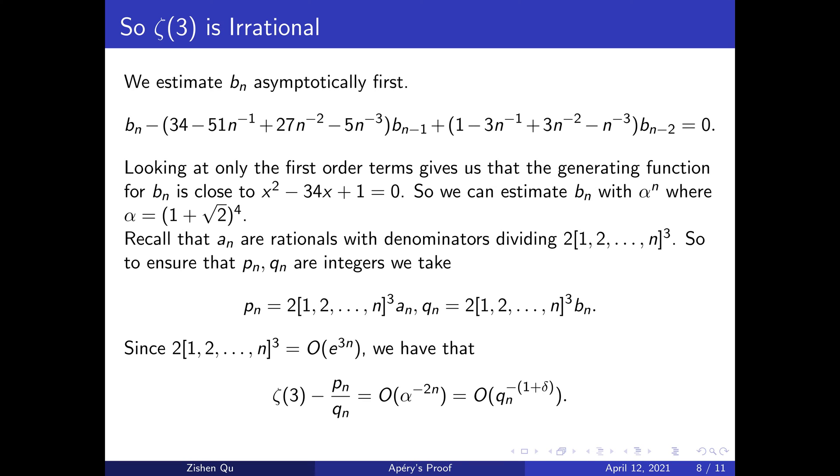Now that we have a more concrete grasp of the error, we can turn our attention to writing the sequence as a quotient of integers. Recall that a_n is a sequence of rational numbers with the denominator dividing 2 times the cube of the least common multiple of 1 to n. So to ensure that both p_n and q_n are integers, we take p_n equals to a_n times this value and q_n equaling to b_n times this value.